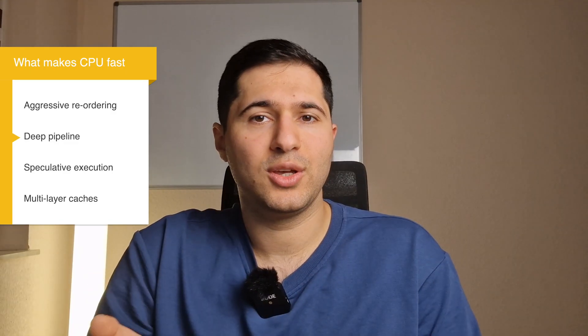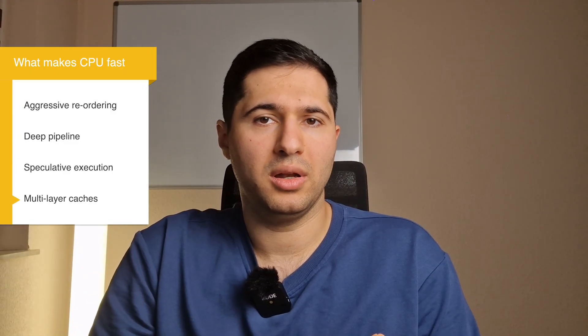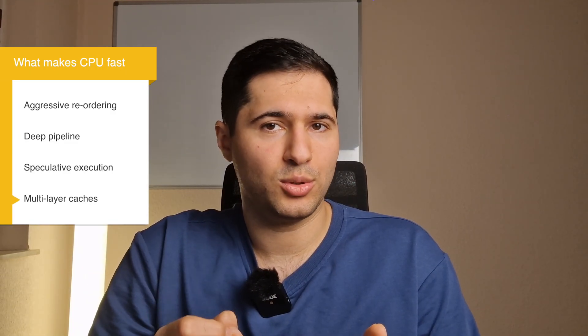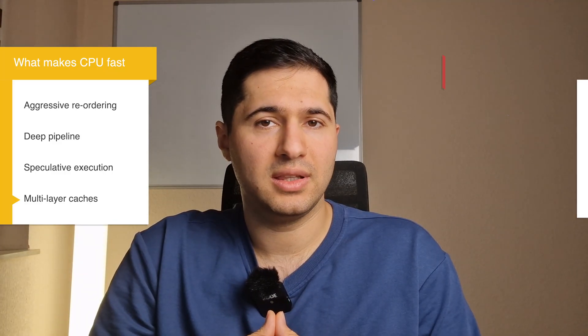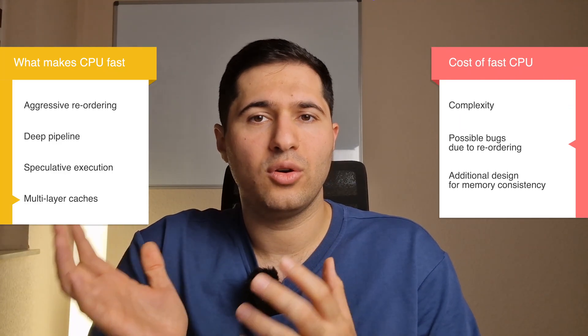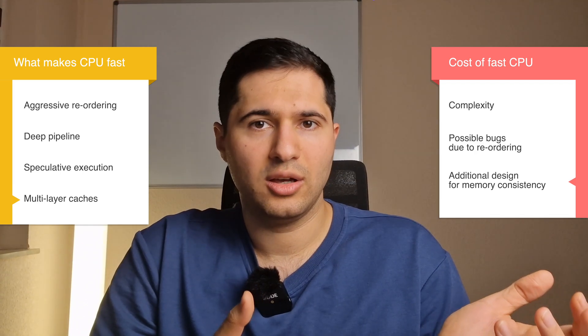Modern CPUs are fast because they're aggressive. They're out-of-order machines with deep pipelines, speculative execution, and multiple layers of caches. But that power comes with complexity. If you want performance and correctness in concurrent systems, you have to respect memory consistency.